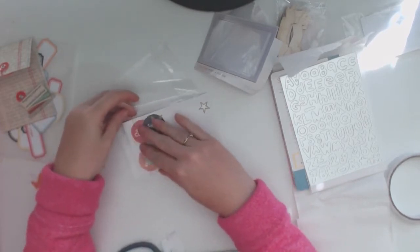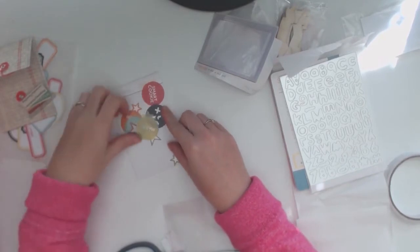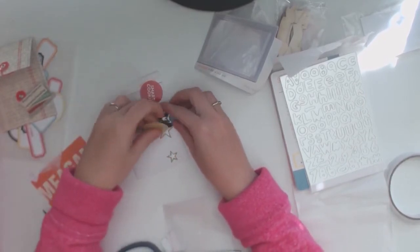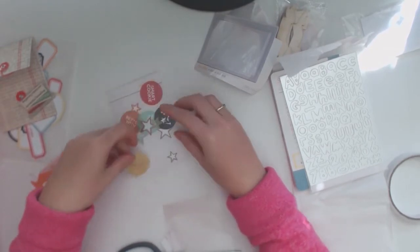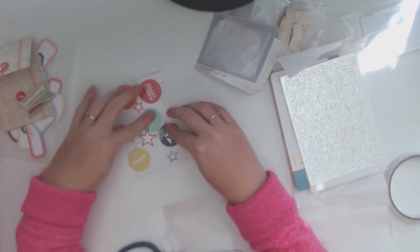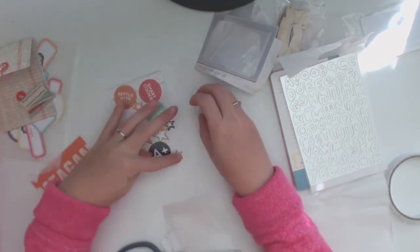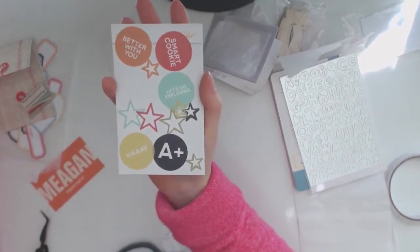So here we've got some transparencies. So they're like plasticky and you know they say things like hey, smart cookie, better with you, let's go exploring, a plus, and then some stars. So again they're like the primary sort of colors.